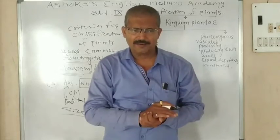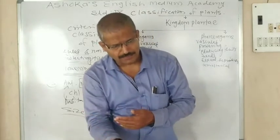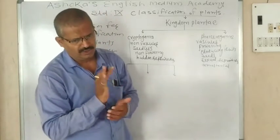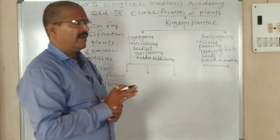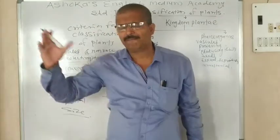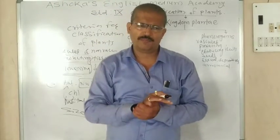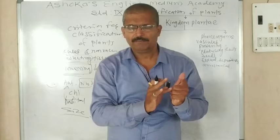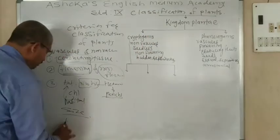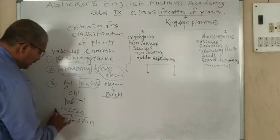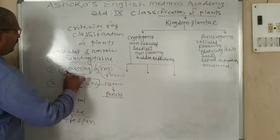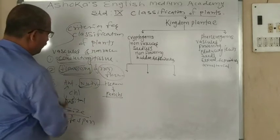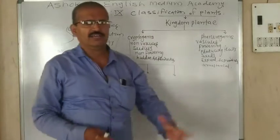Plants producing flowers also produce fruits, and according to that, plants are divided into gymnosperm and angiosperm under Phanerogamae. Another criterion is lifespan — some plants live for a very short time while some survive for many years. So plants are classified as annual, biennial, and perennial. These are the different criteria used for the classification of plants.